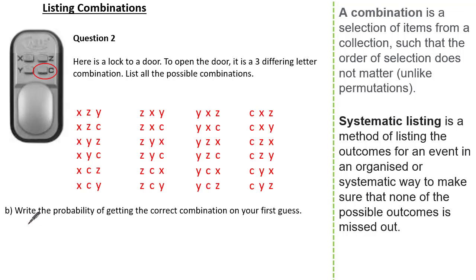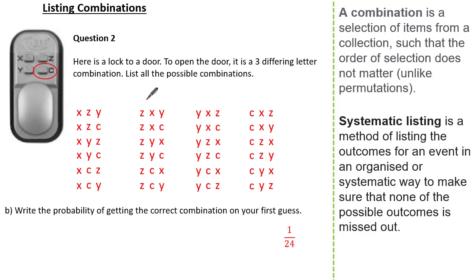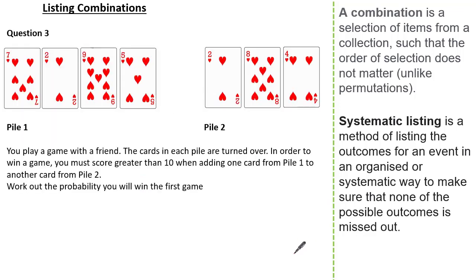Now let's look at the second part of the question: we need to write the probability of getting the correct combination on our first guess. Given we have 24 different combinations, the probability of opening our door on our first guess is 1 out of 24.